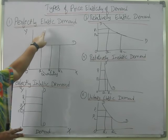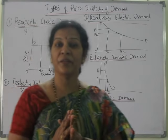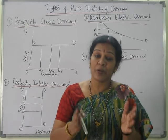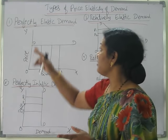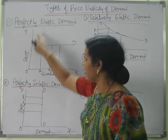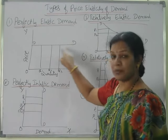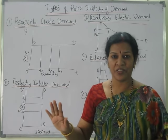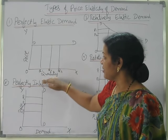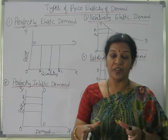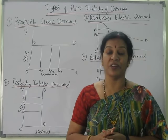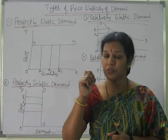The first type is perfectly elastic demand. In perfectly elastic demand, quantity will always be changing where the price is constant — there is no change in the price, but still quantity will be changing. We can observe this through a diagram where the X-axis represents quantity and the Y-axis represents price. The demand curve is horizontal — price is stable, no change at all, but quantity is changing from Q1 to Q2 to Q3.